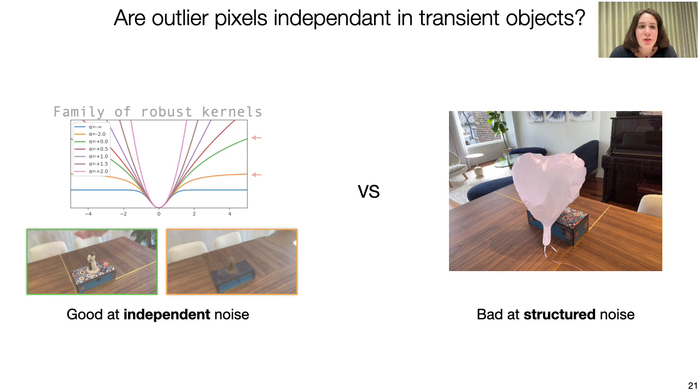So, we design a specific robust loss for NERF with the spatial consistency of objects in mind.